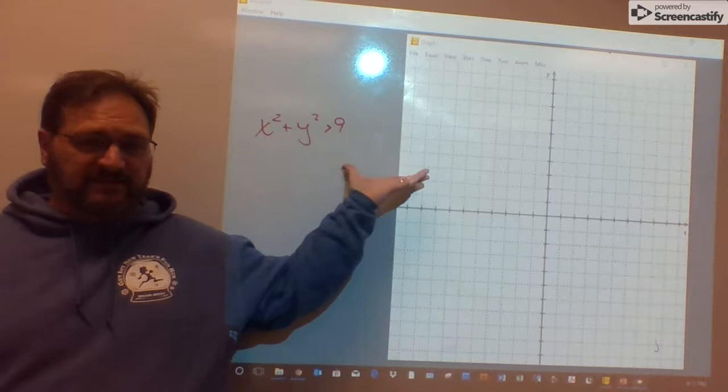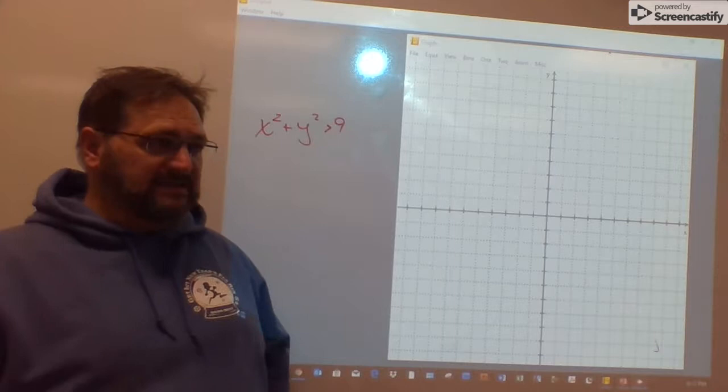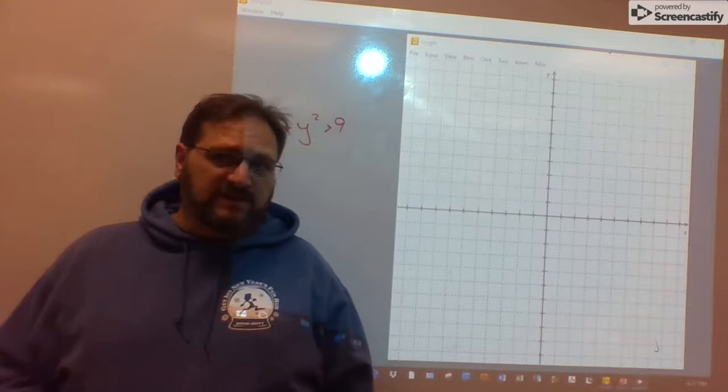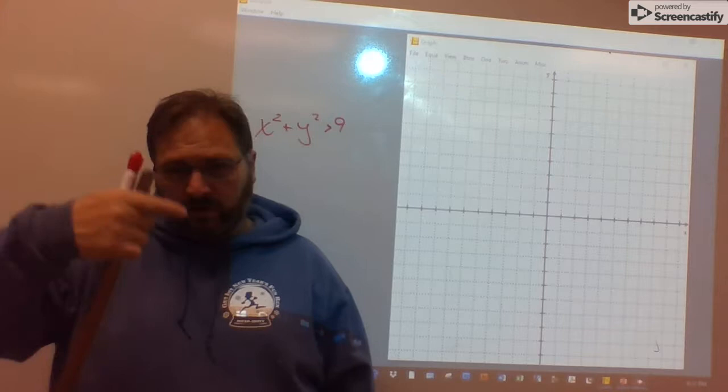Here we're going to graph x squared plus y squared is greater than 9. You might recognize x squared plus y squared equals a positive number from the first chapter when we were studying the basic graphs, the basic definitions, how to work around the rectangular coordinate plane.